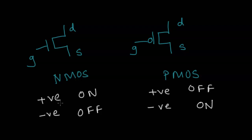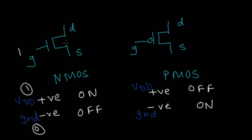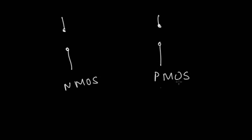In digital terms, the positive supply voltage is called VDD and ground is zero. Digitally, VDD means logic 1 and ground means logic 0. So if the gate of an NMOS is at logic 1, it turns on; at logic 0, it turns off. We can treat the transistor as a switch. When the gate is 1, the NMOS switch is closed (conducting) and the PMOS switch is open. When the gate is 0, the NMOS is open and the PMOS switch is closed (conducting).